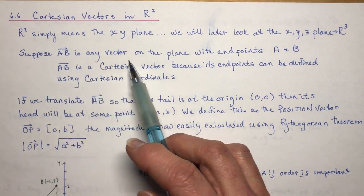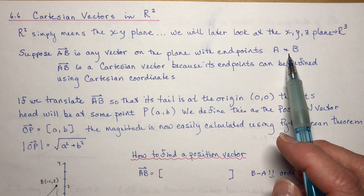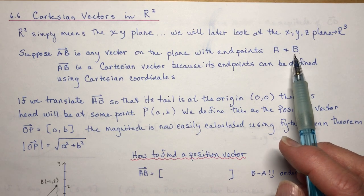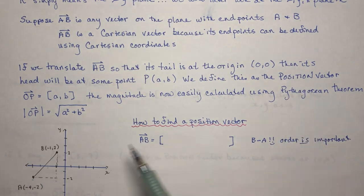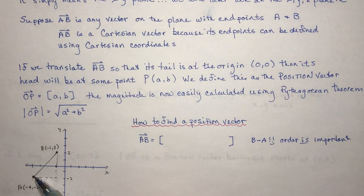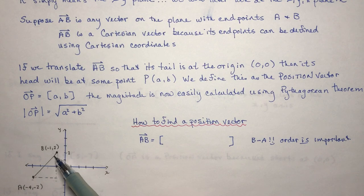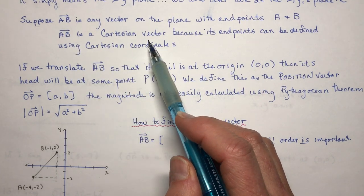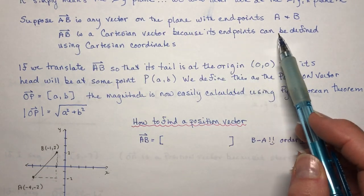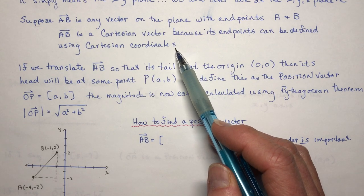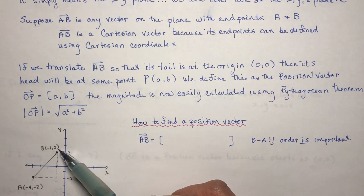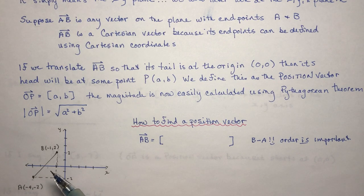So suppose AB is any vector on the plane with endpoints AB. So I've drawn one way down here. I think that's far enough down. So from A to B. So here's my two points, A and B, on a Cartesian plane, and AB could be the vector AB. So AB is a Cartesian vector because its endpoints can be defined using Cartesian coordinates. So if you have coordinates on the plane, you can make a Cartesian vector out of anything.